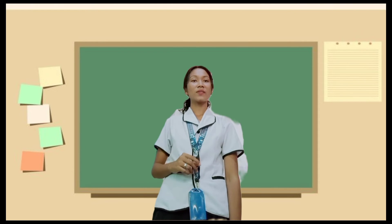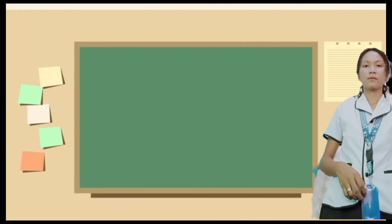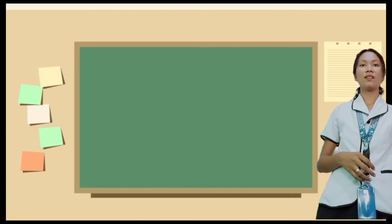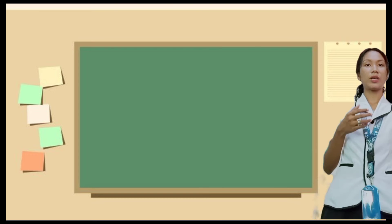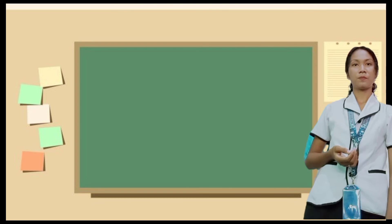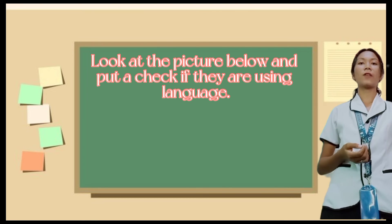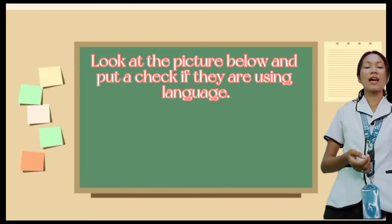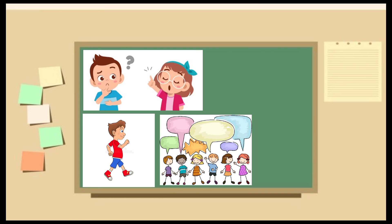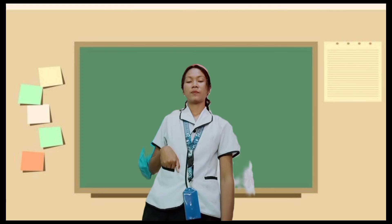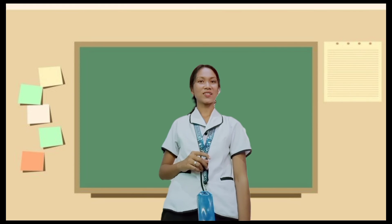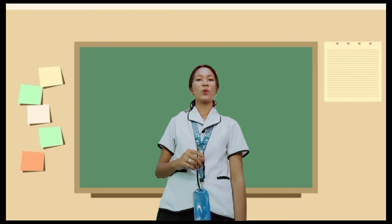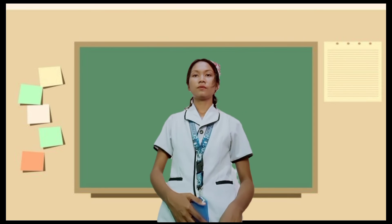Now let's proceed to our individual activity. Look at the pictures — put a check if they are using language and an X if not. If you got all five correct, congratulations! You understand the lesson.